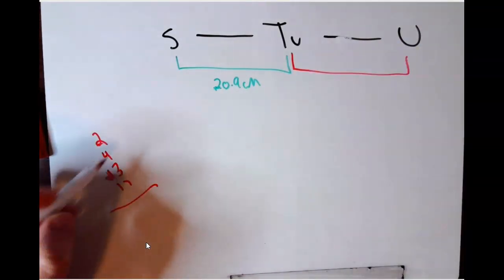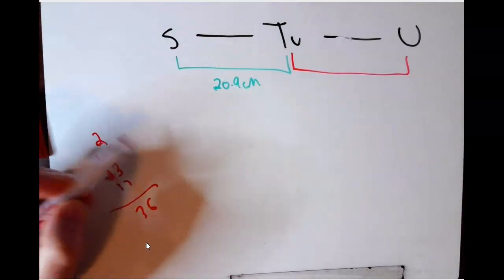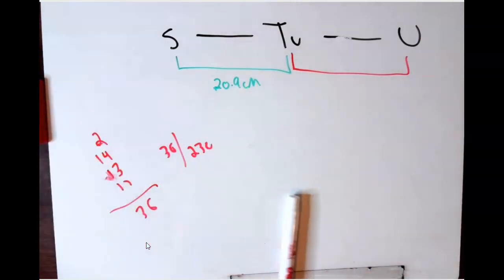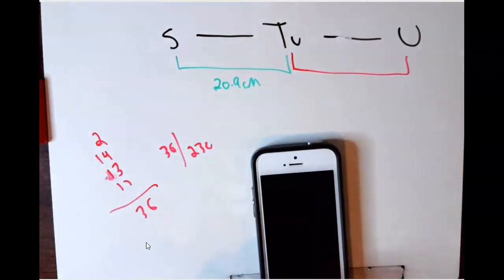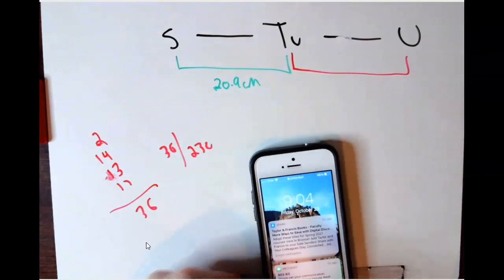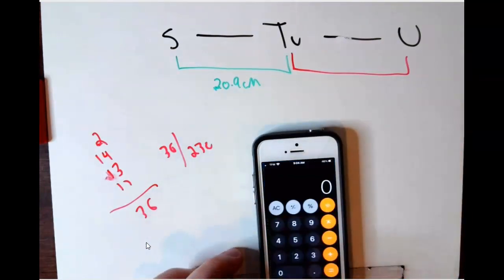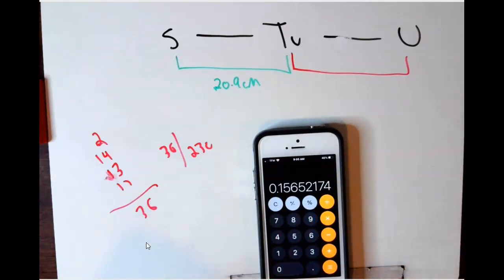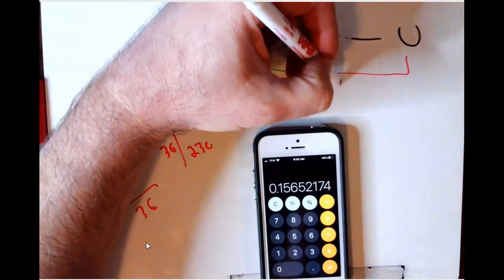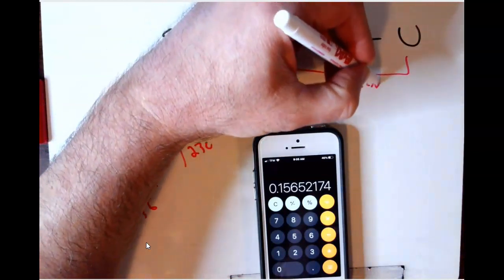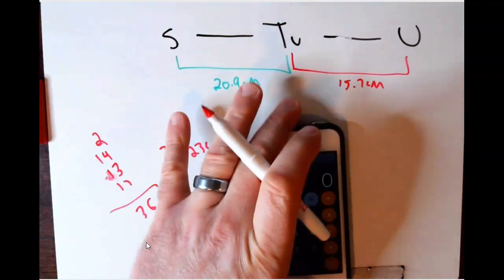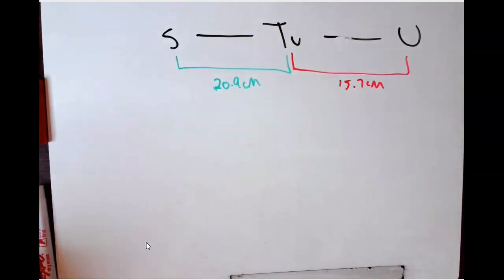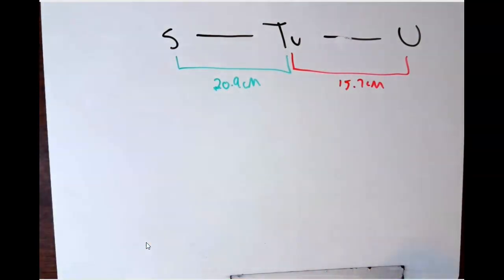Totaling those up: 2 + 4 + 13 + 17 = 36. Then 36 divided by 230 gives approximately 15.7 centimorgans or 15.7% recombination between t and u.